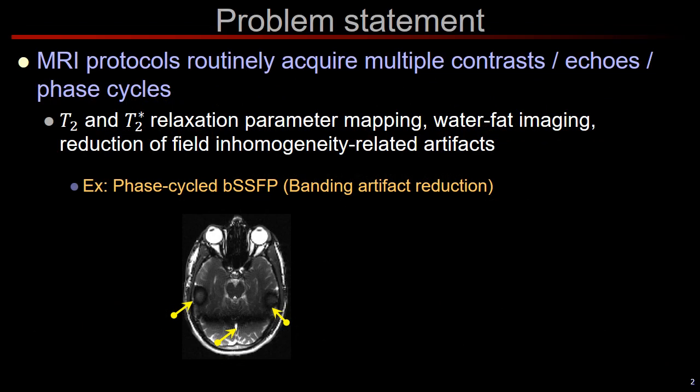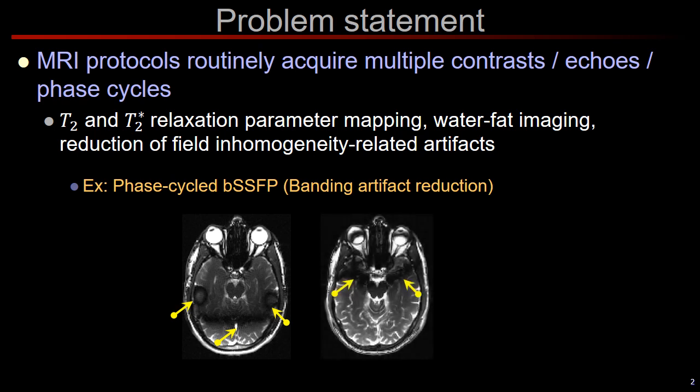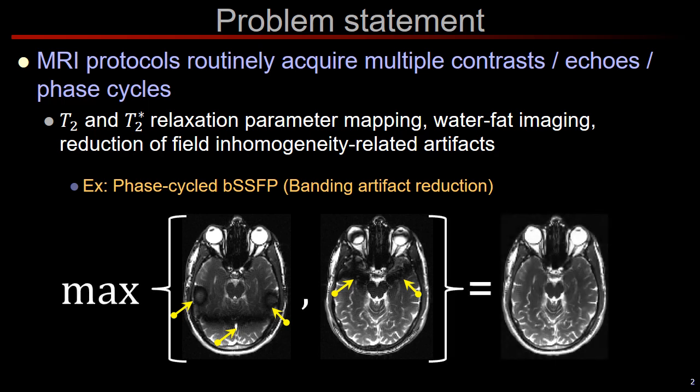In MRI, it is routine to acquire multiple images with different contrasts, echoes, inversion times, or phase cycles. These are helpful in relaxation parameter mapping, water-fat imaging, or reducing B0-related artifacts. For instance, images in a balanced SSFP acquisition suffer from banding artifacts due to B0 inhomogeneity, but acquiring a second image with a different phase cycling scheme shifts the location of these bands, and we can combine the two images to mitigate these artifacts.